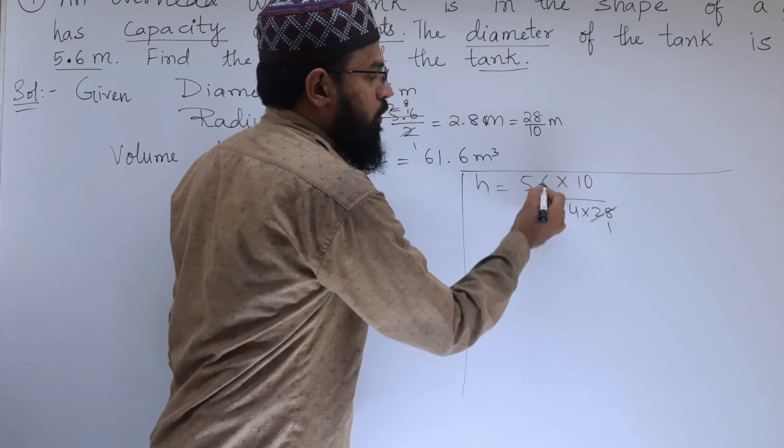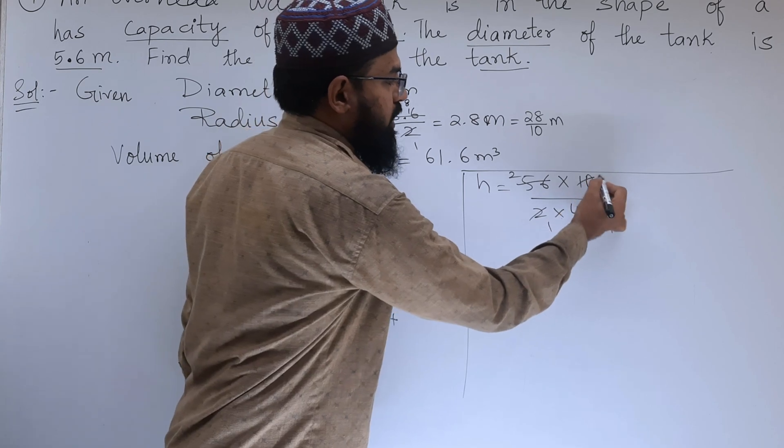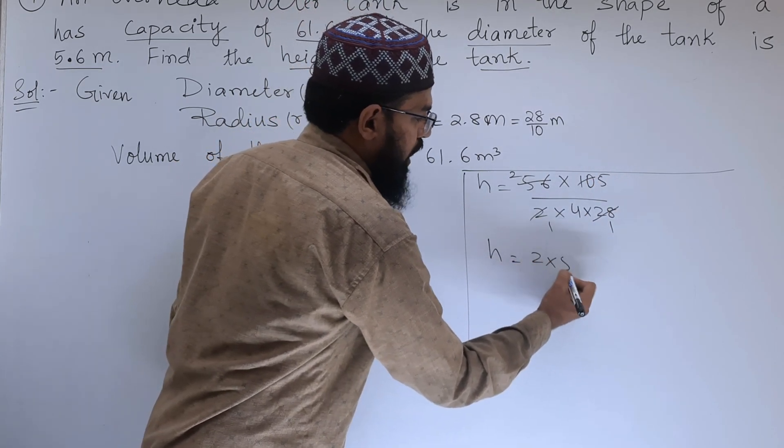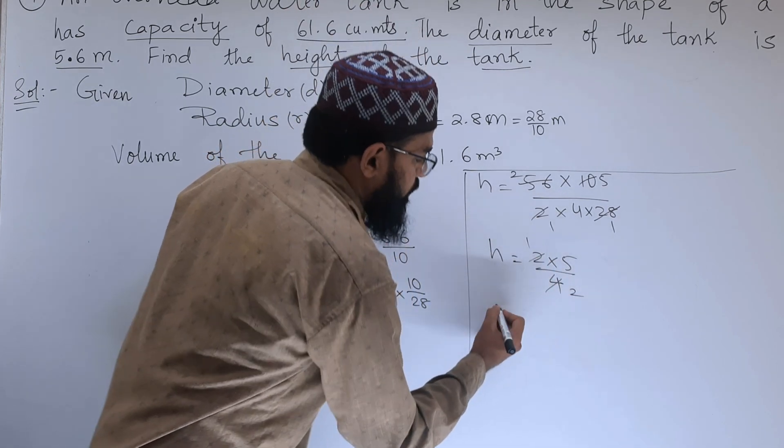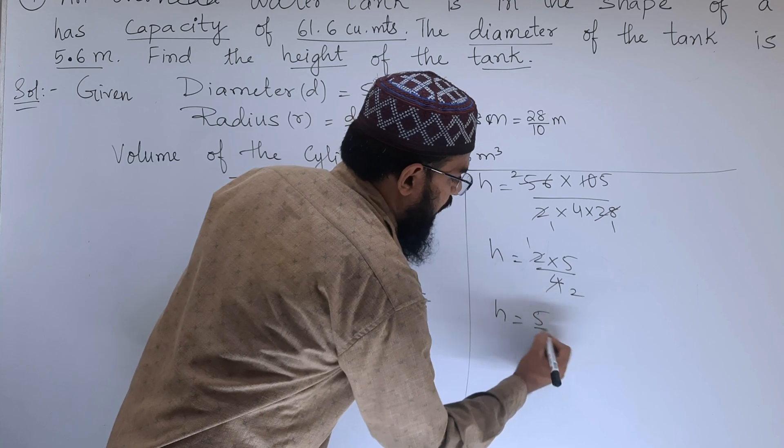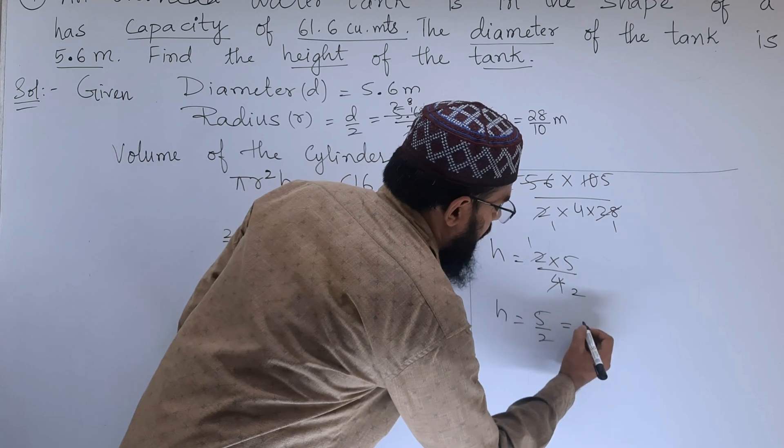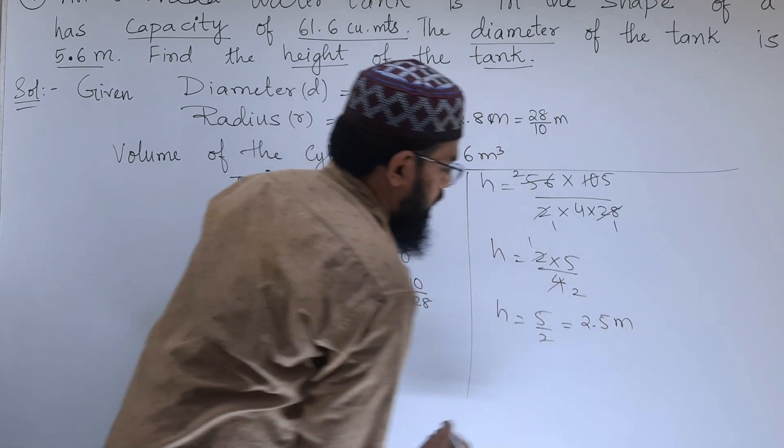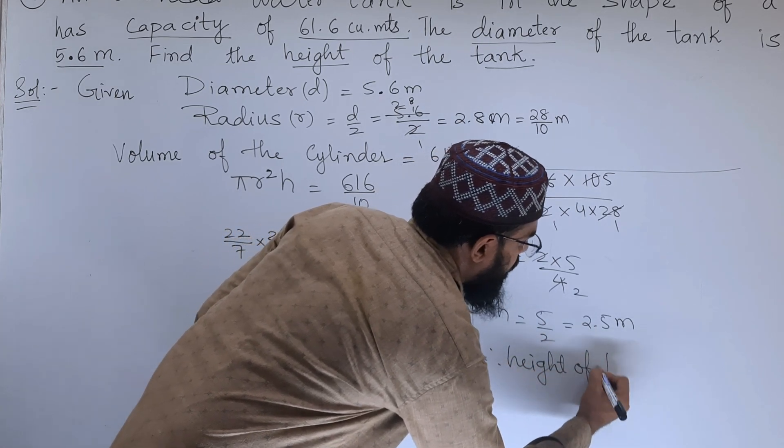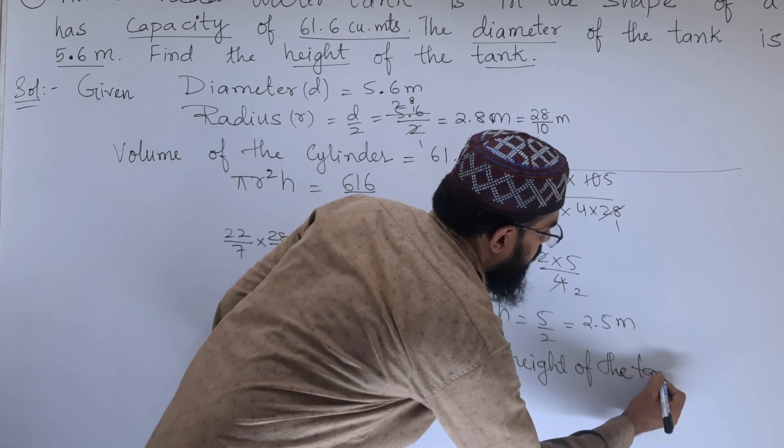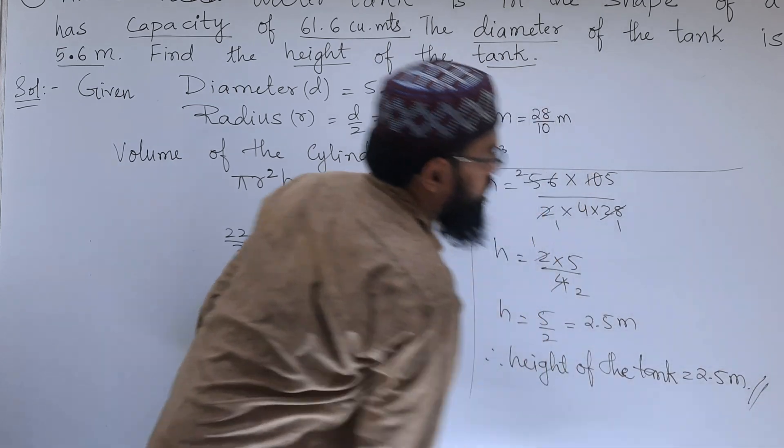Continuing the calculation: 2 into 4 into 28, we can cancel this, h equals 2 into 5 by 4. Simplifying further, h equals 5 by 2. Half of 5 is 2.5, so 5 by 2 equals 2.5 meters. Therefore, height of the tank equals 2.5 meters.